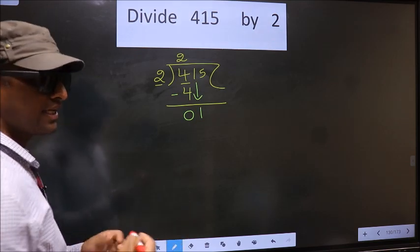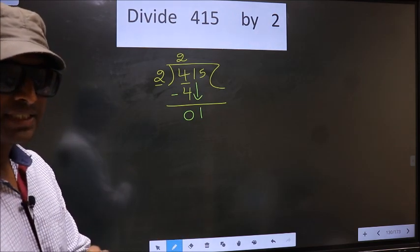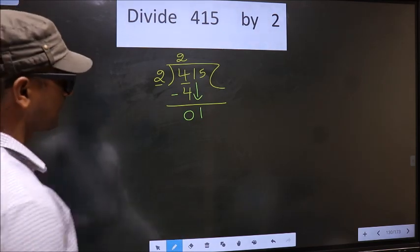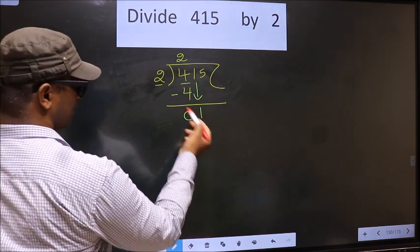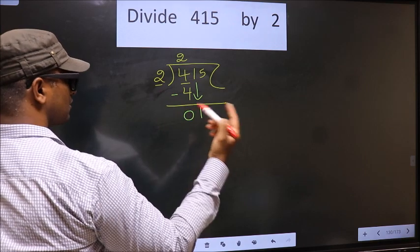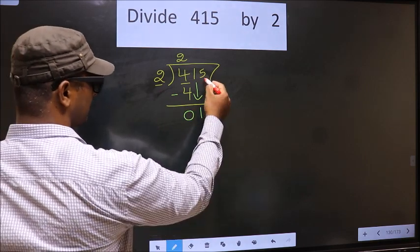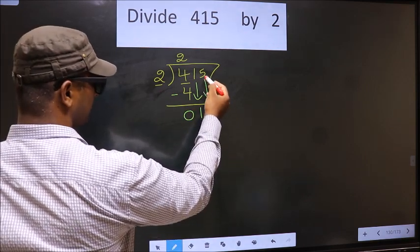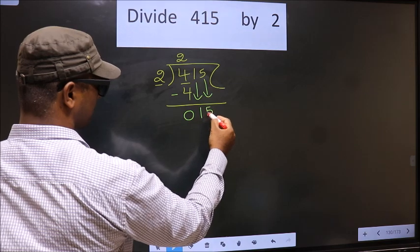This is where the mistake happens. Here we have 1, here 2. 1 is smaller than 2. So what many do is they directly bring down the second number down. That is 5 down.